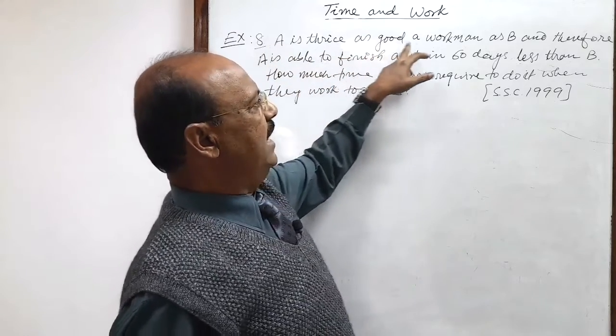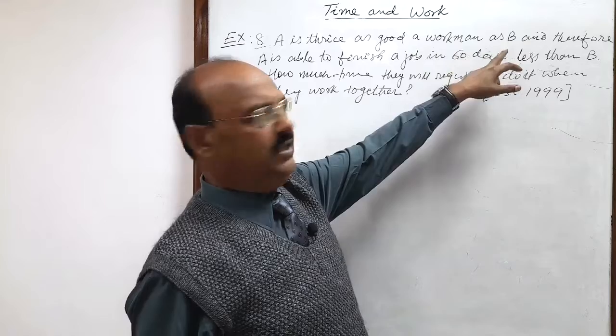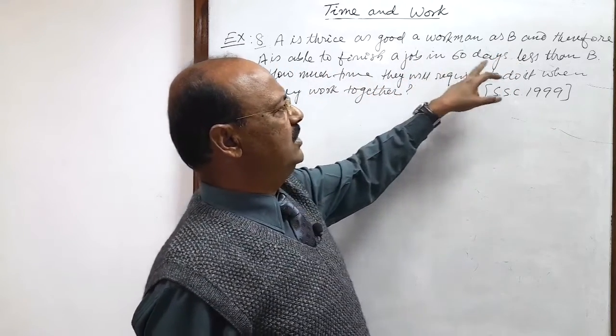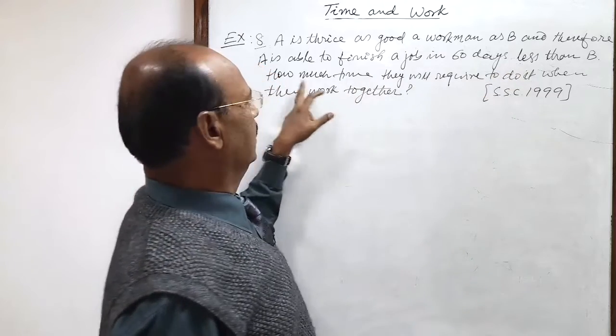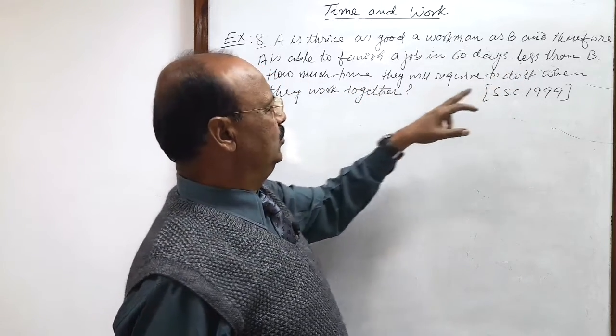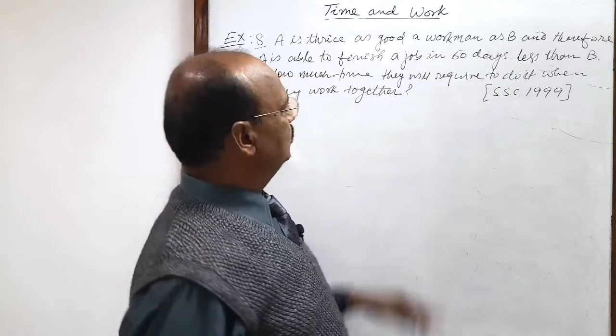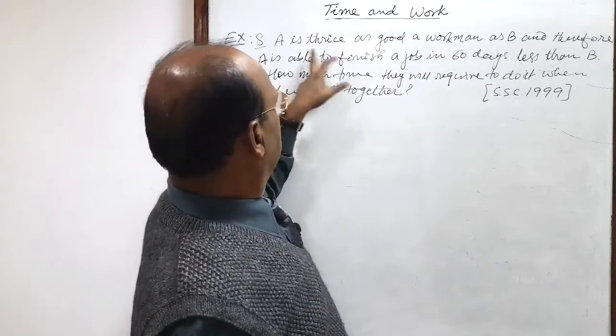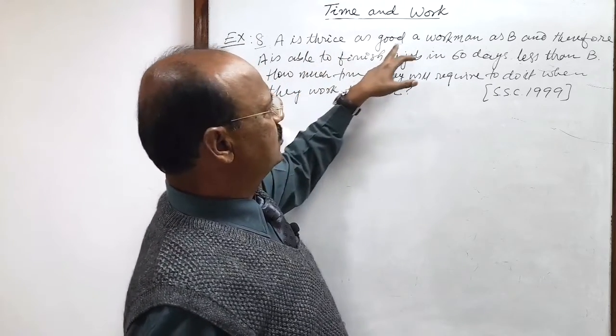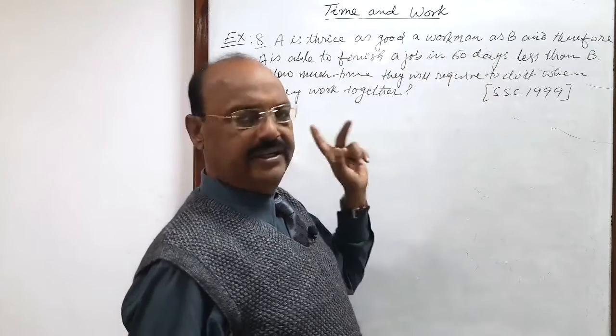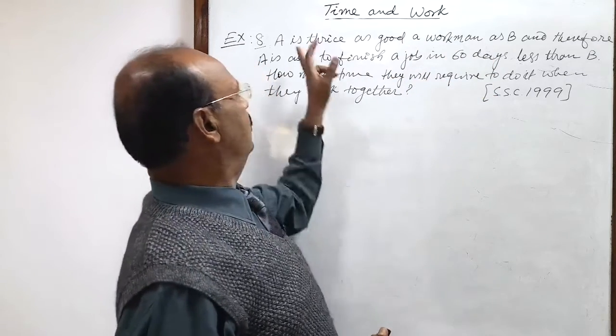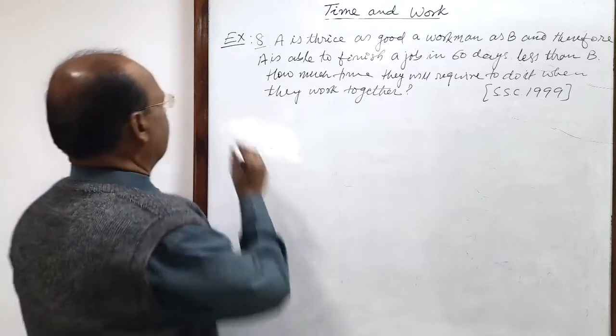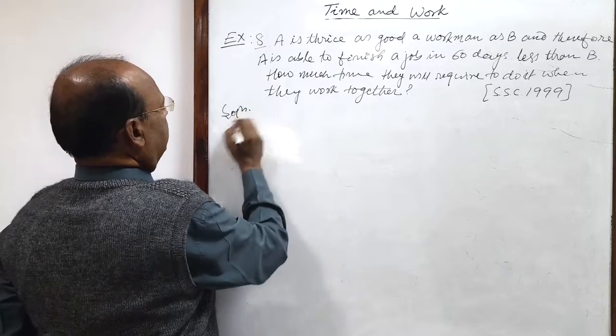Here the question is: A is thrice as good a workman as B and therefore A is able to finish a job in 60 days less than B. How much time will they require to do it when they work together? So what is given here? The ratio of efficiency. A is thrice as good a workman as B, meaning the efficiency of A is three times the efficiency of B.